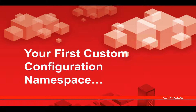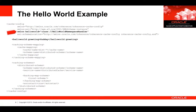What would our first custom configuration namespace look like? Let's do something simple — we want to create a hello world. So to do this, we have a new namespace called hello world and that would be implemented using our hello world namespace handler. Somewhere in our cache configuration we're going to use our namespace, and in this case we're going to create a greeting element, and being Australian we're going to say g'day.